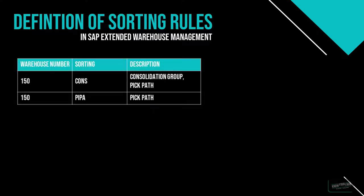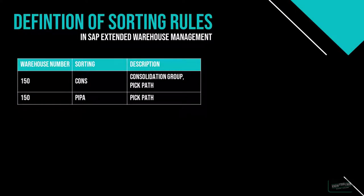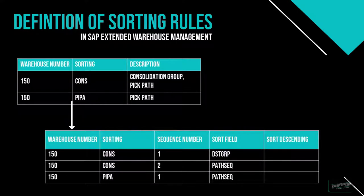In this example we can see the definition of two different sorting profiles. One is called CONS for consolidation group and the other one is called PIPA for picking path. To each of those sorting rules different sorting fields are applied. For example, we could sort the CONS profile by the consolidation group first, and within each consolidation group we want the warehouse tasks to be sorted by the storage bin sorting sequence. Or maybe the profile PIPA is only going to sort the warehouse tasks by the respective storage bin sorting sequence.